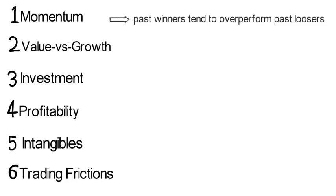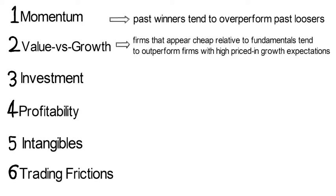Momentum says that past winners tend to outperform past losers. Value versus growth says that firms that appear cheap relative to fundamentals tend to outperform firms with high prices and growth expectations.